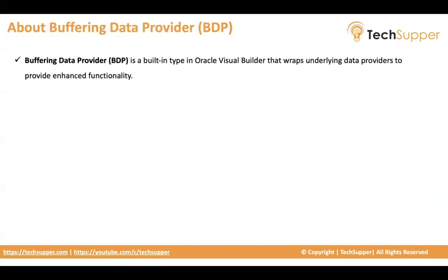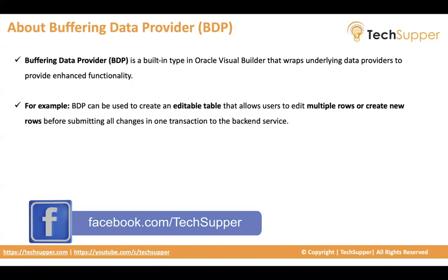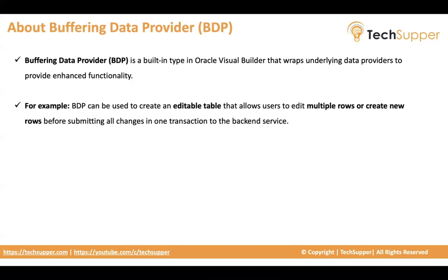Let's understand what Buffering Data Provider is. BDP is like a built-in type — just like we have Array Data Provider and Service Data Provider. BDP is also a built-in type that wraps up underlying data providers to provide enhanced functionality. You can consider BDP as basically using another data provider — when you create the BDP you have to first create an SDP or ADP, and based on that provider you will create your Buffering Data Provider.